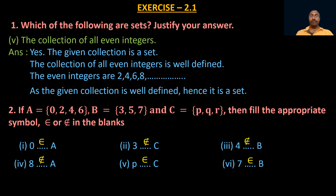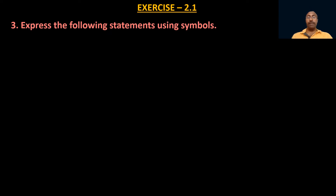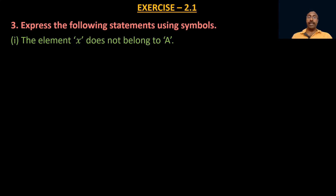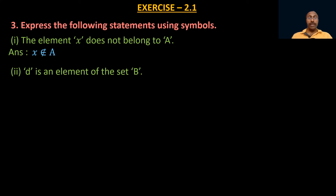Now the third problem: express the following statements using symbols. First: 'the element x does not belong to A.' Using the symbol for 'does not belong to', we rewrite this in mathematical form as x ∉ A. Second: 'd is an element of the set B,' meaning d is present in set B, so we write d ∈ B.